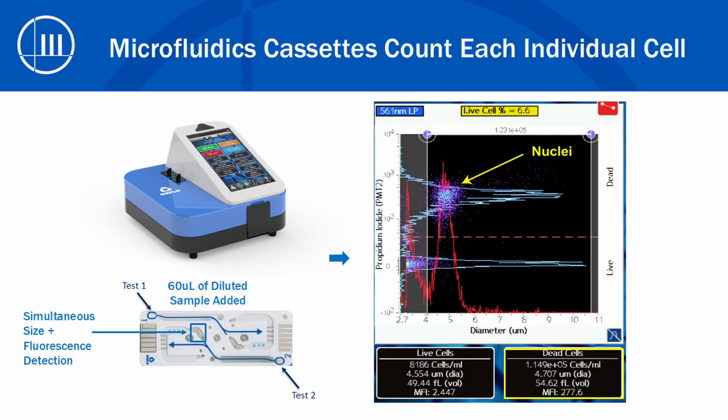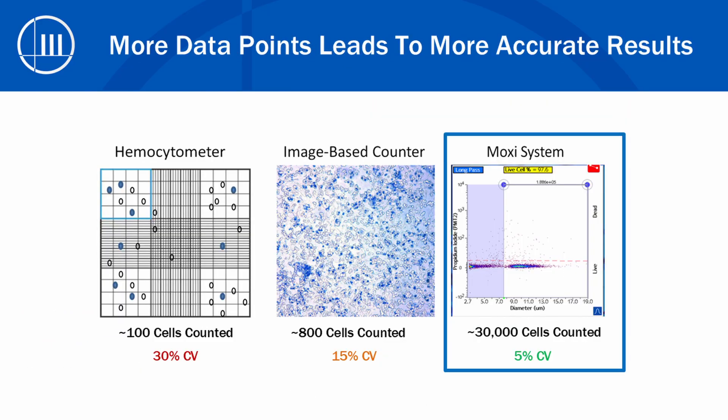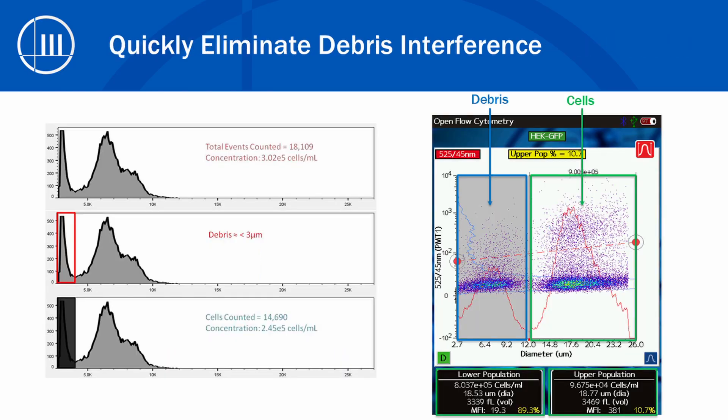This means you don't miss critical information when you're doing nuclei counting before a single cell run. It's simple — the more data points you measure, the more accurate the results are going to be. Image-based systems, which only take a single plane photograph and try to find cells in the image, often have trouble identifying debris. MOXIE, on the other hand, measures everything right away and uses size to quickly separate out debris from real cells.